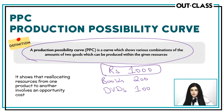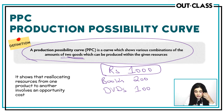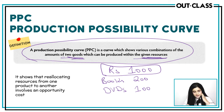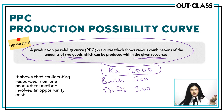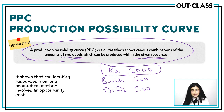So what does a production possibility curve show you? A production possibility curve shows various combinations of the amounts of two goods that can be produced within the given resources. It also shows that every time you decide to make more of one good, you will incur an opportunity cost and will have to let go of some of the other good — just as when buying more books, you have to let go of some DVDs, and vice versa.